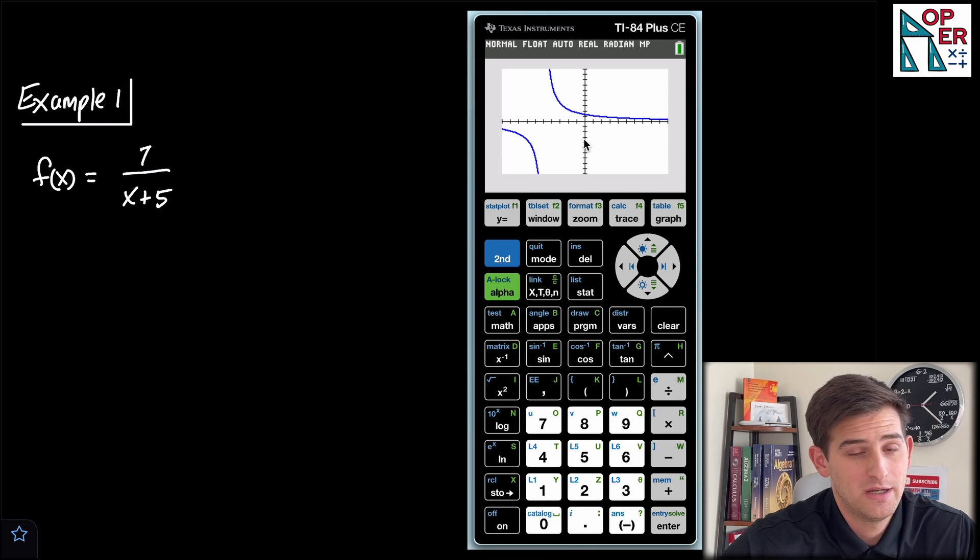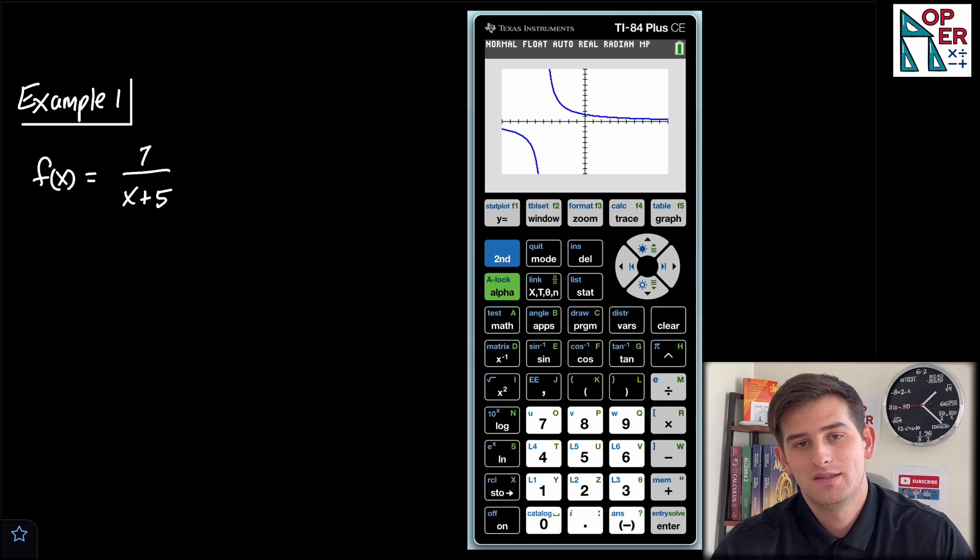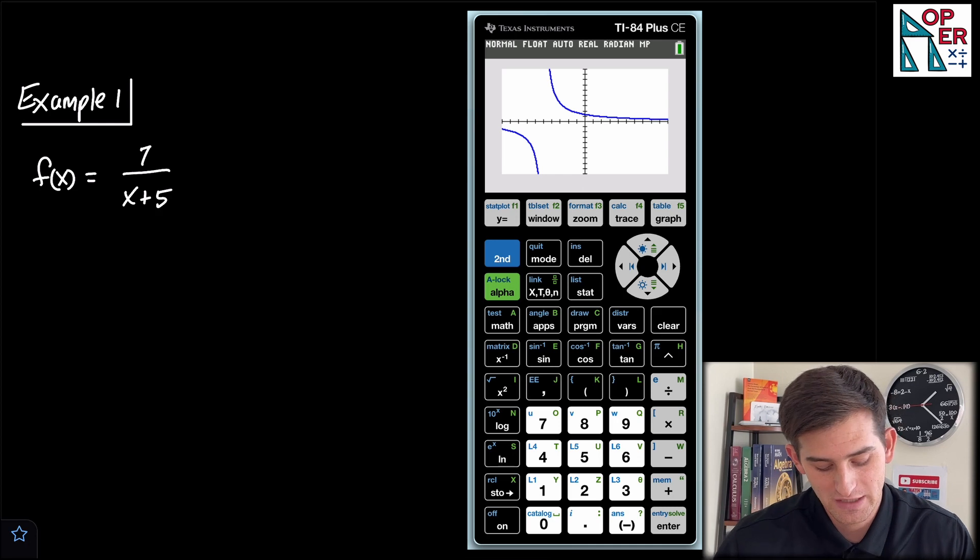Okay, so we have this graph on the screen right now, and what we know about rational functions, this piece up here at the top is going to approach, but not intersect the x-axis, and same for this piece at the bottom. So we know we're good. It passes the horizontal line test, which means that the inverse of this function is also a function. So we can go ahead and solve it now.